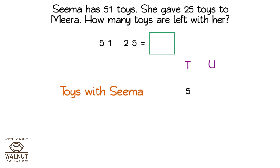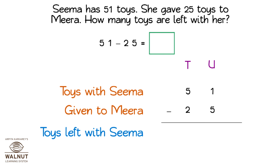Now, we subtract the numbers in the units place. Can you do it? No? So, we have to borrow. Let us see how to do that. Let us break apart one ten and give it to the units. We change the values in the tens and units place. Now, we can subtract. We can subtract the units, and then we subtract the tens. That gives us the final answer. So, 51 minus 25 is equal to 26.